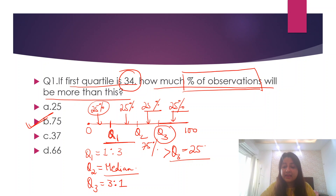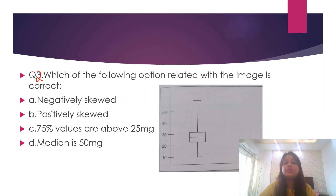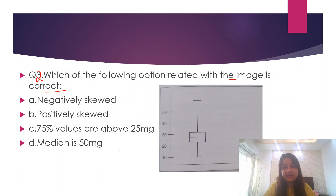Now these quartiles can be represented by a statistical image called a box and whisker plot. This is the image of a box and whisker plot. The question asked in one of the AIIMS papers in 2018 was: which of the following options related to this image is correct? Does it represent negatively skewed distribution, positively skewed distribution, 75% of values above 25mg, or median is 50mg?